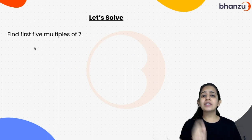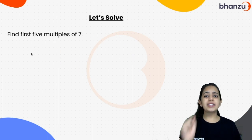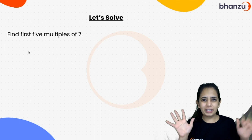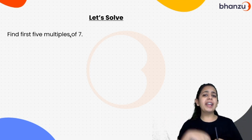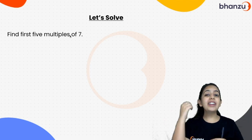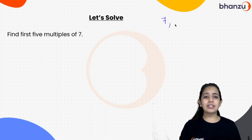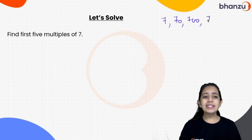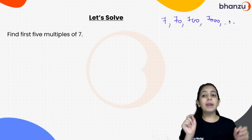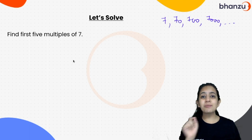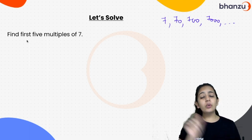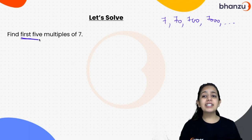Now let's understand multiples through a question. The question is: find the first 5 multiples of 7. Only the first 5, not any random multiples. Because if the question says 'write any 5 multiples of 7,' then you can write any five — like 7, 70, 700, 7000, and so on. But this question is very specific: write only the first 5 multiples, the starting 5 multiples.